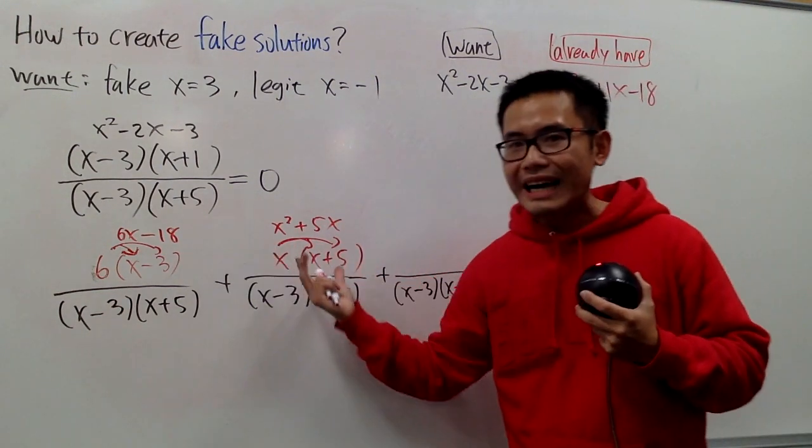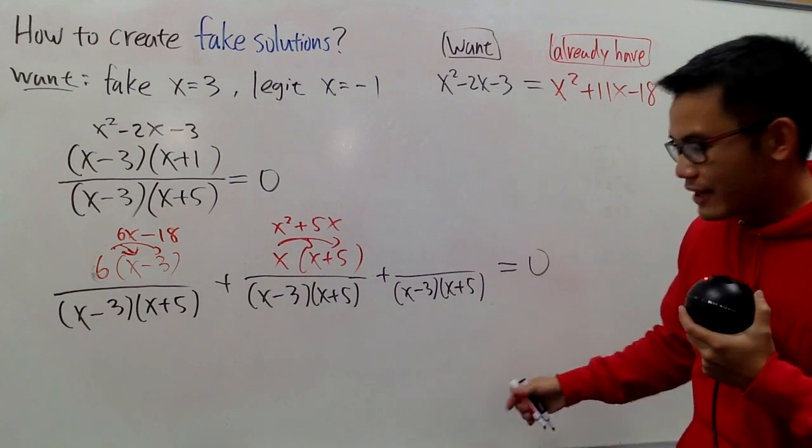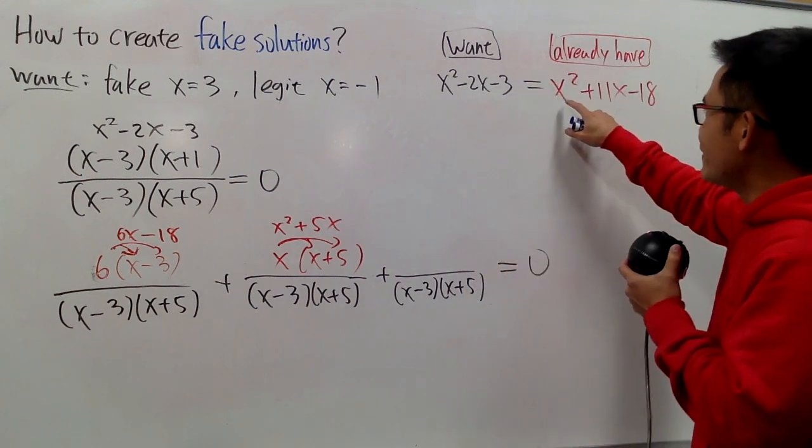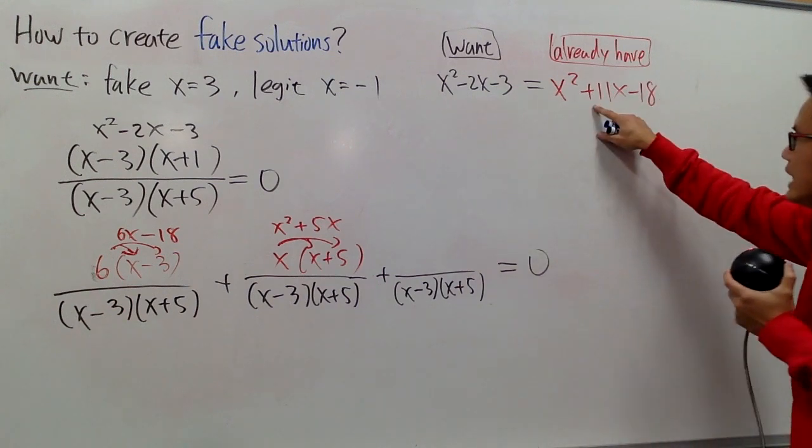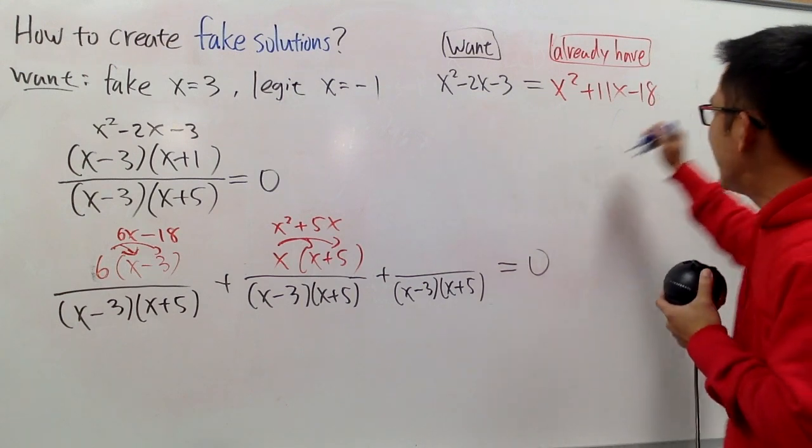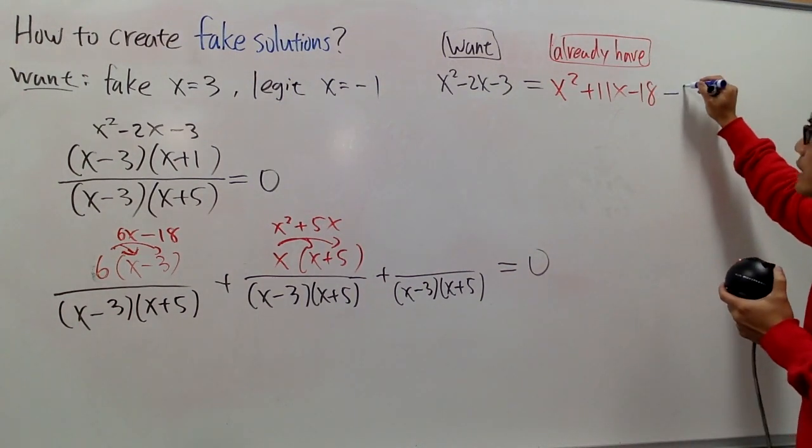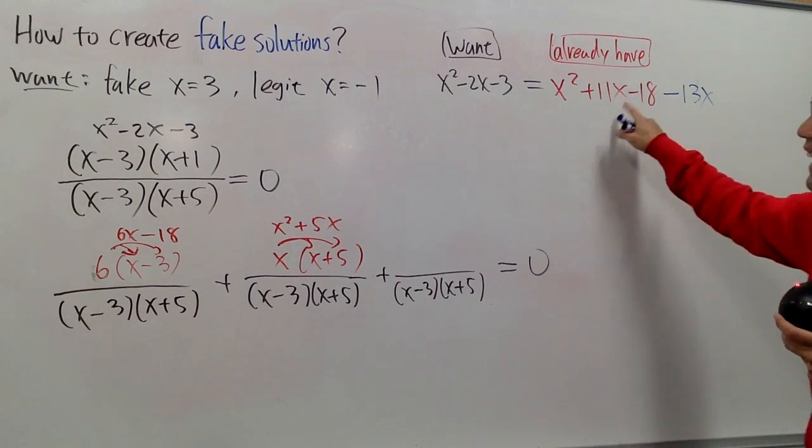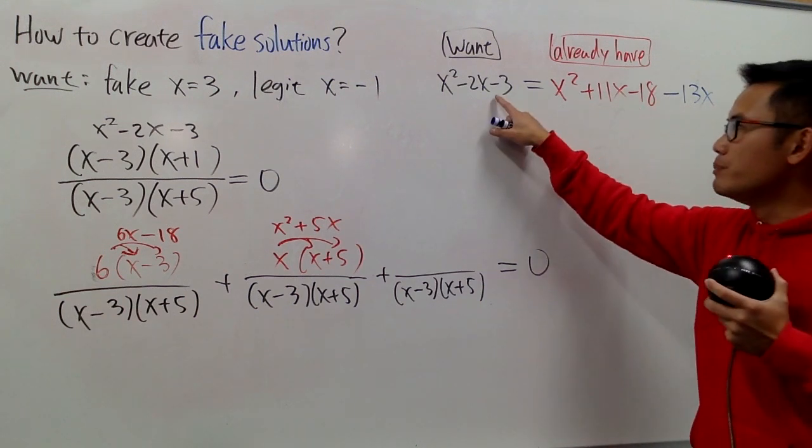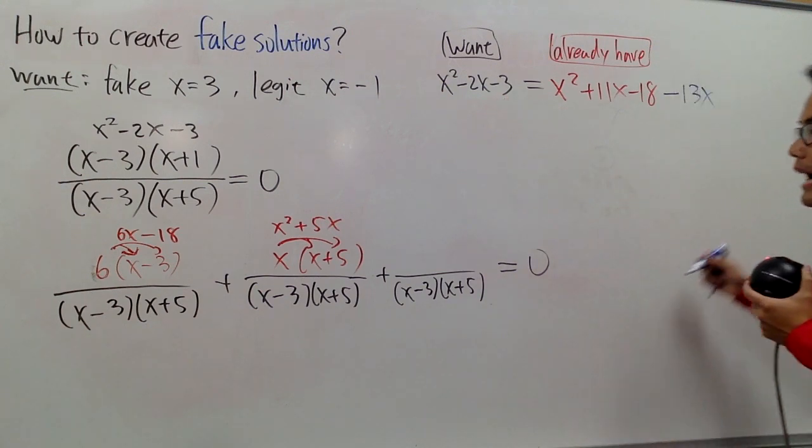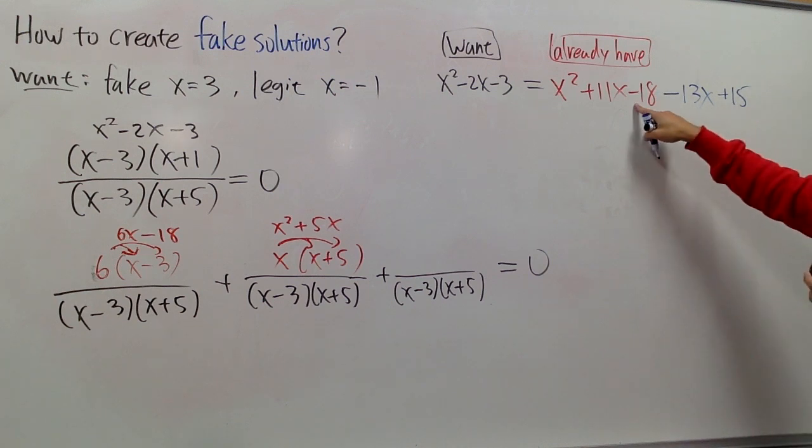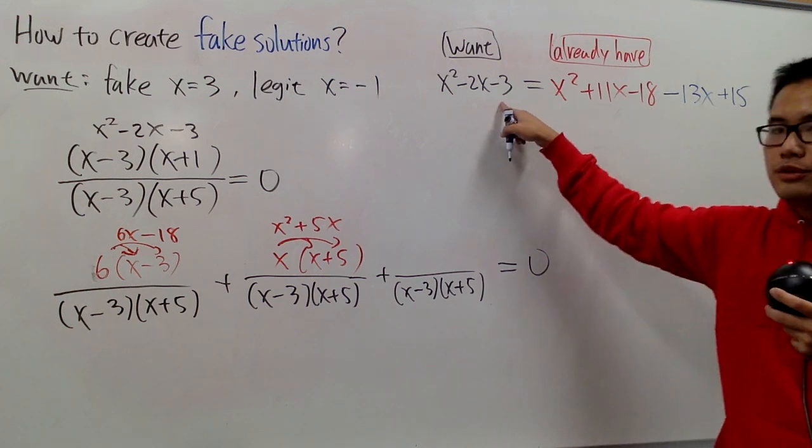Well, this is what we have already. How can we make it actually balanced to each other? Of course, we are going to use our blue pen right here. So now, we have the x squared that match. That's good. Now, this is 11x. I want to end up to be negative 2x, so I will just subtract 13x. And then next, I have negative 18 right here, but I want to end up to be negative 3. That means I should add 15, because negative 18 plus 15, that will be negative 3.